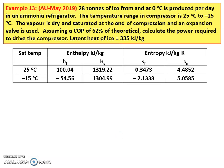Example number 13, from the May 2019 question paper. 28 tons of ice from and at 0 degree Celsius is produced per day in an ammonia refrigerator. The temperature range in the compressor is 25 degree Celsius and minus 15 degree Celsius. The vapor is dry and saturated at the end of compression and an expansion valve is used. Assume a COP of 62% of theoretical. Calculate the power required to drive the compressor. The latent heat of ice equals 335 kilojoules per kilogram and the properties of the ammonia refrigerant are given.